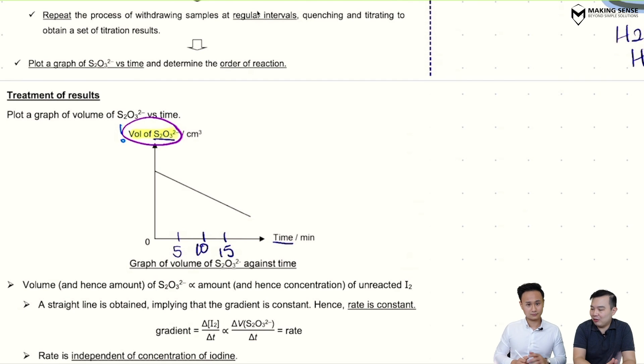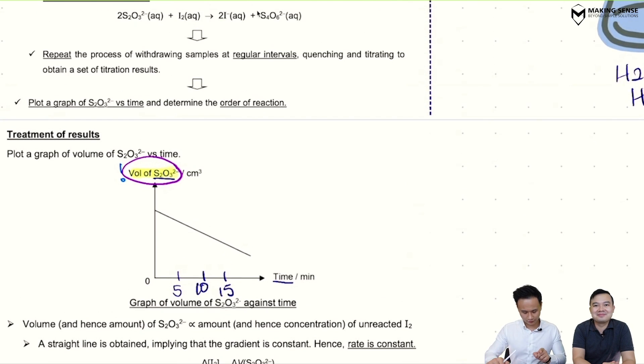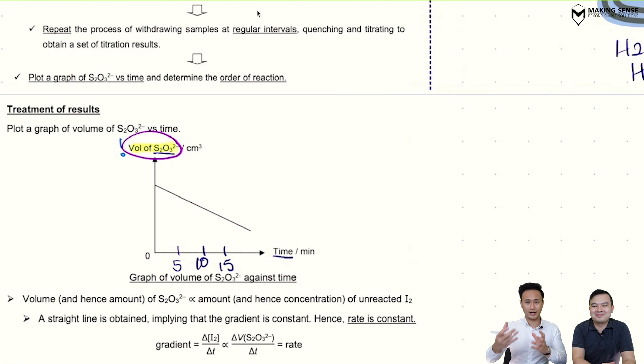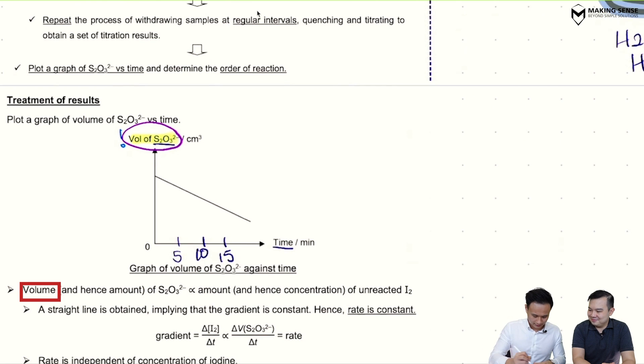So how does that relate back? We know this: the volume of thiosulfate—the more unreacted iodine you have, then the more volume of thiosulfate you need for titration. Which means the volume and hence the amount of thiosulfate is proportional to the amount of unreacted iodine. So plotting this graph is almost as good as plotting concentration of unreacted iodine.